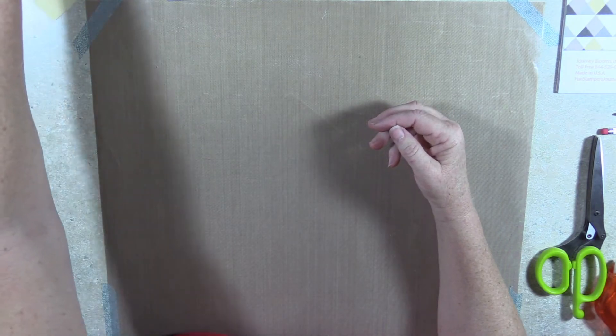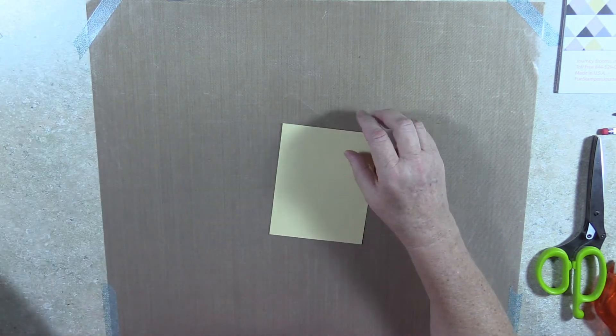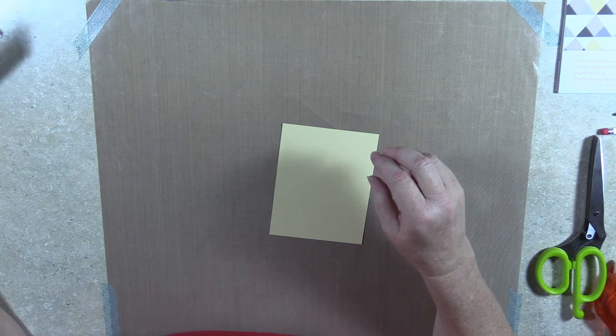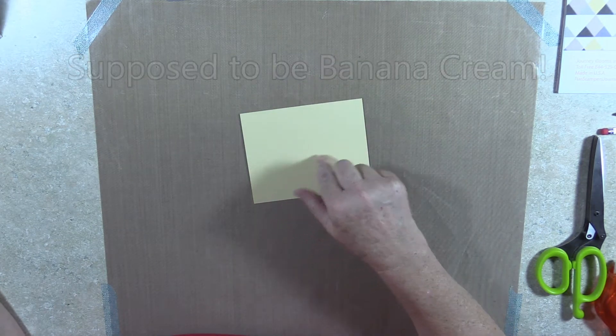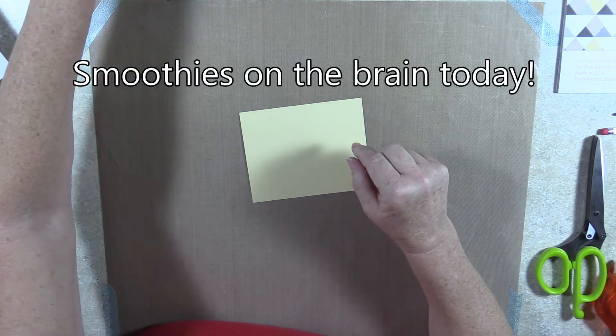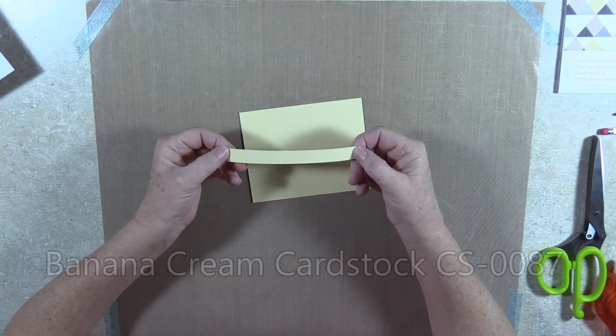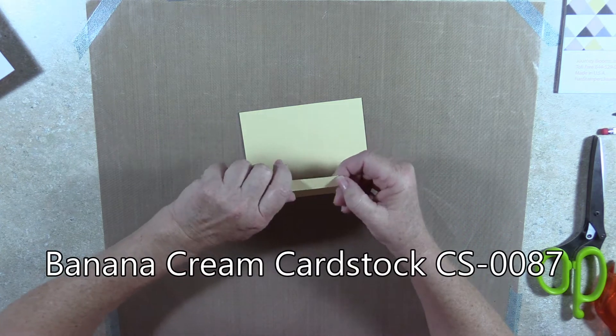First we need banana smoothie cardstock. We need two pieces cut 4 inches by 5 inches, and then we need one piece cut 5 inches by a half inch. So let's start with that.